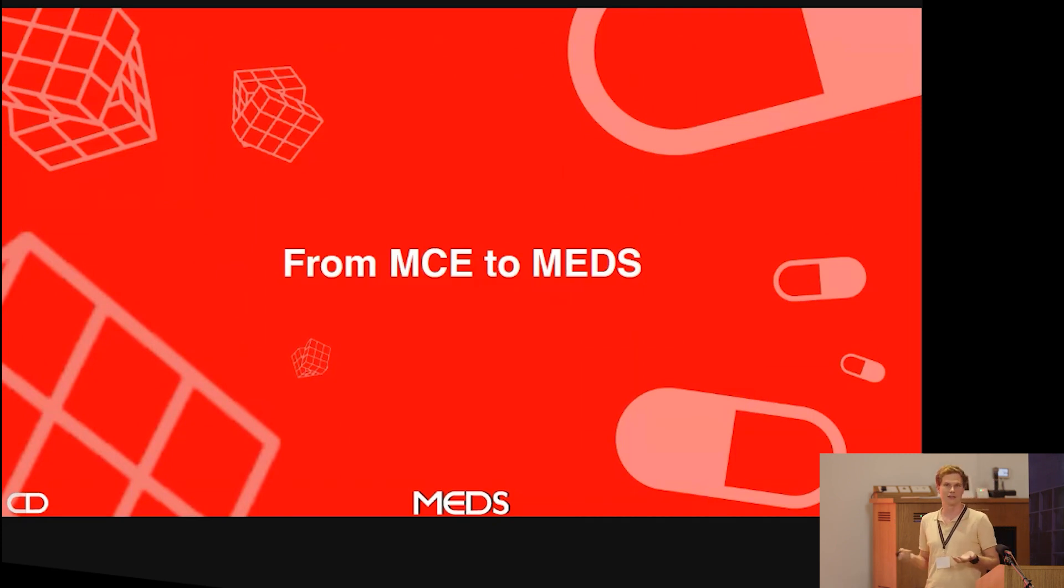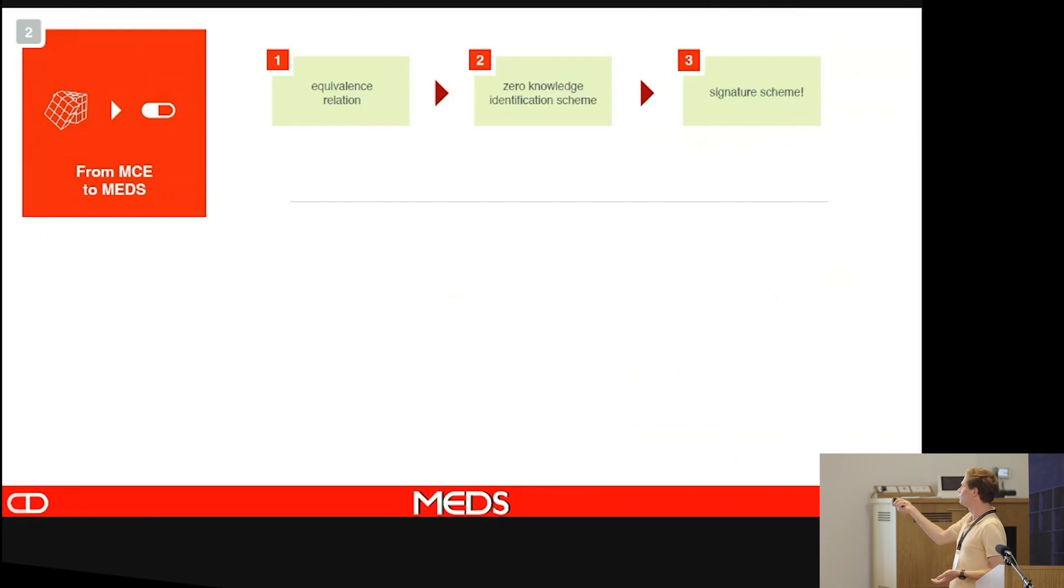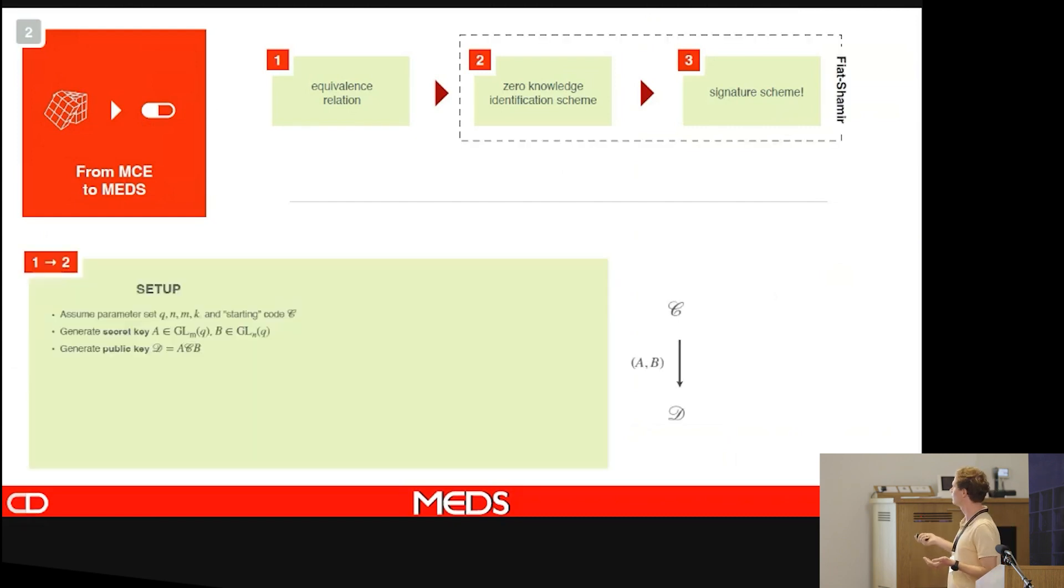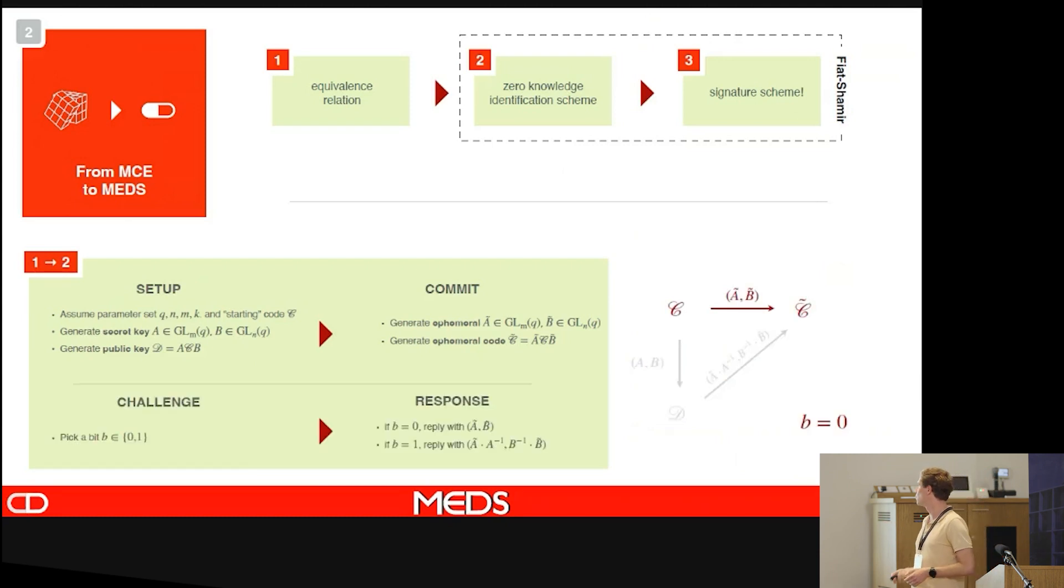How do we make a signature out of this? Eduardo already told a lot, so I will focus mainly on the things that are different for MEDS. We have an equivalence relation, we apply it via Fiat-Shamir and we get a signature scheme. We have a starting code C and another code D, and those are our public key, and we have a secret isometry A, B. To make a signature, we make a commitment. We have an ephemeral key, A tilde, B tilde, and we create an ephemeral code, and this is our commitment. Because we know the secret isometry, we can also create an isometry from D to C tilde. When we get a challenge, on challenge zero, we will send the ephemeral key, and on challenge one, we will send the composition. Then we get soundness a half.